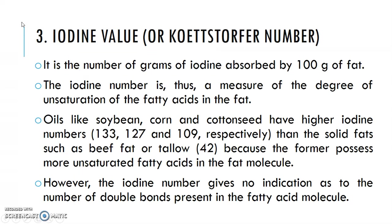The iodine value is the number of grams of iodine absorbed by one gram of fat. The iodine number is a measure of the degree of unsaturation of the fatty acids in the fat. Oils like soybean, corn, and cottonseed have higher iodine numbers, meaning more unsaturation in the fatty acids, while solid fats such as beef fat have a very low iodine number of 42. Note that the iodine number does not indicate the number of double bonds in individual fatty acids, but reflects the average degree of unsaturation of the fatty acids in the fat.